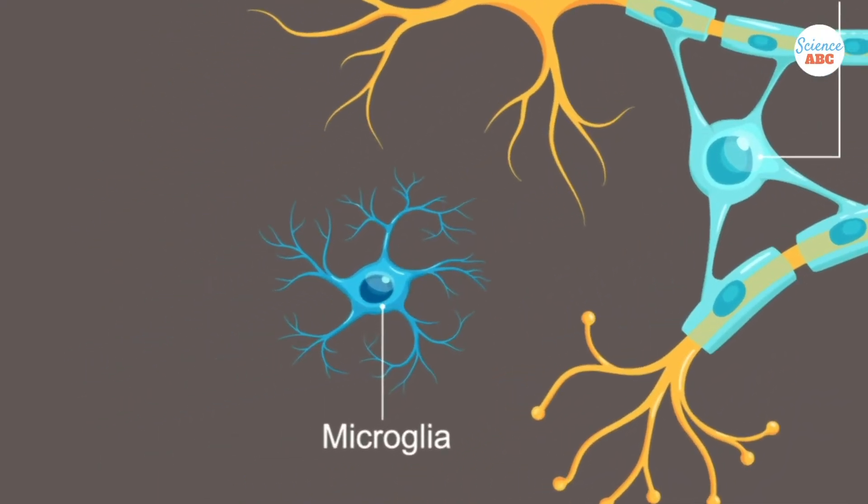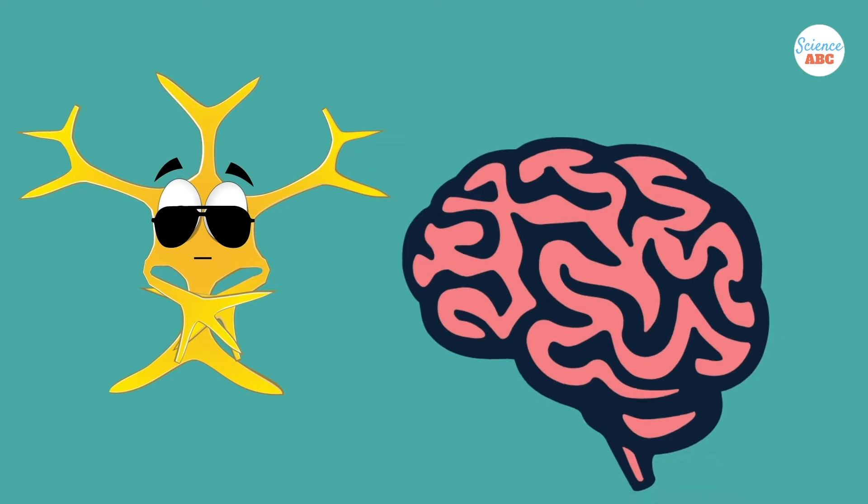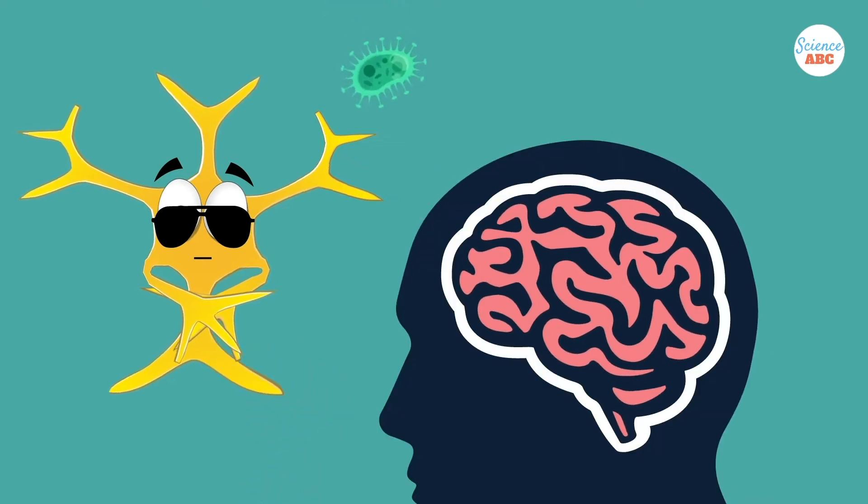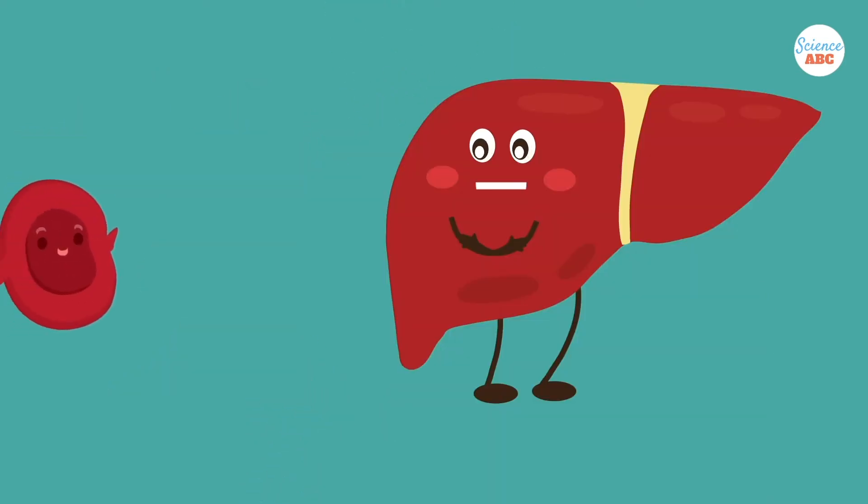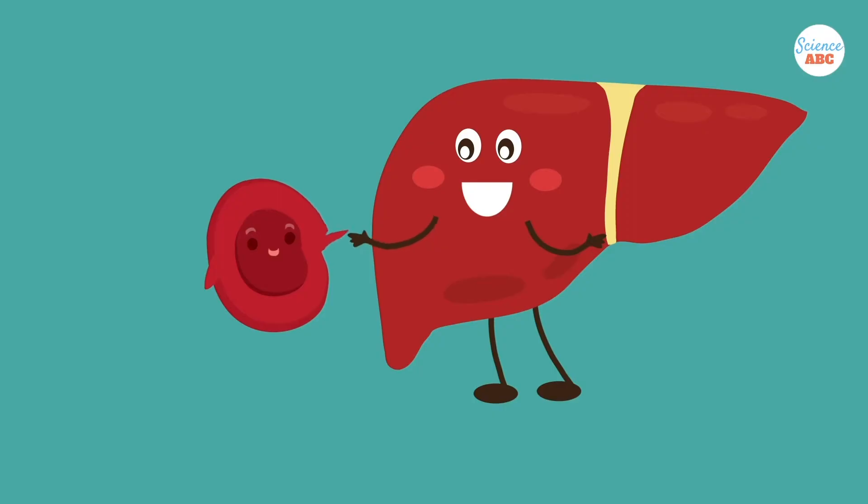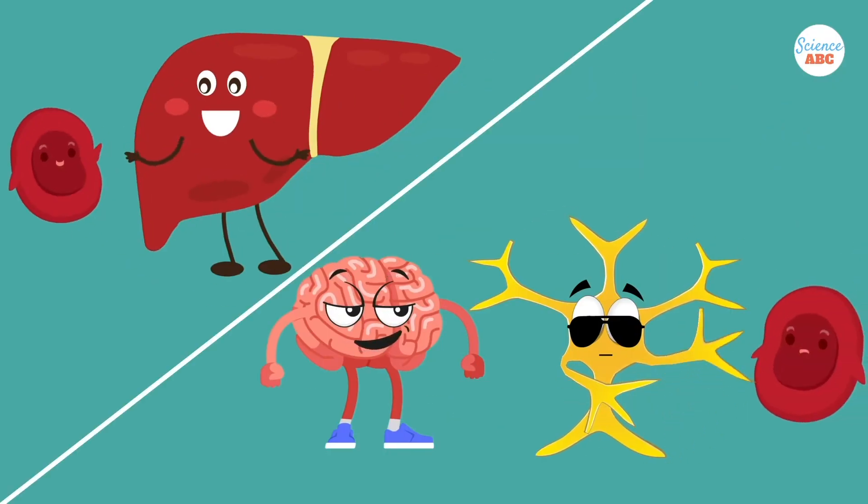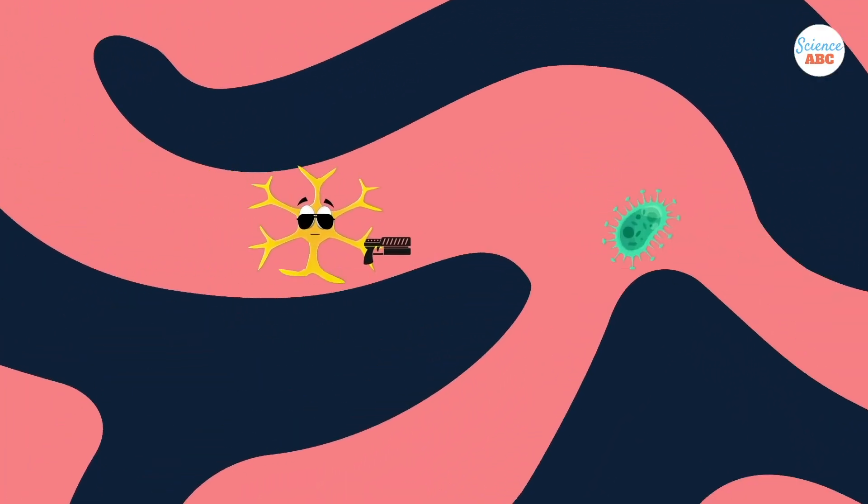The microglia is the brain's immune bodyguard. The brain is a highly privileged and protected part of the body. Blood and substances that would be freely allowed to interact with other organs are not allowed to do so in the brain. The microglia patrol the brain, killing off any invader that dares to enter this VIP organ.